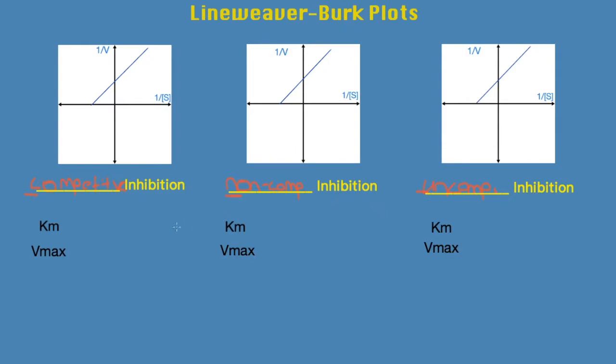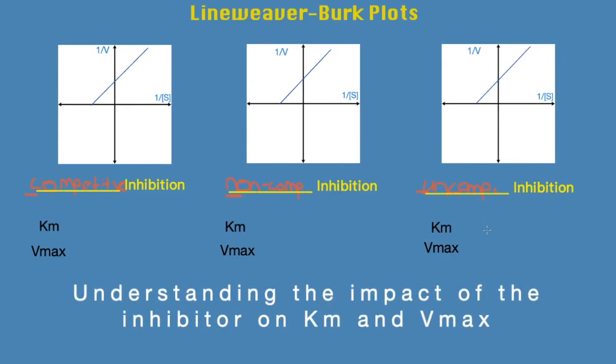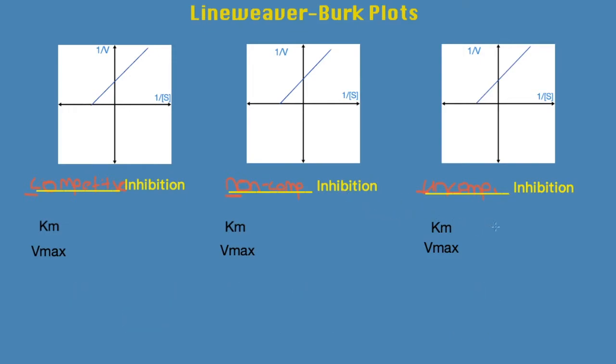Now we know we have both our Km and our Vmax values, and I'm going to operate with the understanding that you guys already know what these are. First thing you want to do is recognize if the inhibitor will increase, decrease, or have no change.